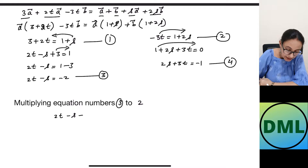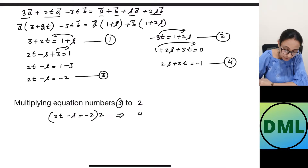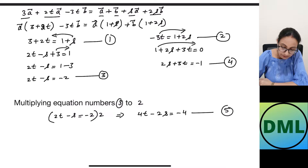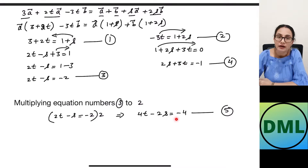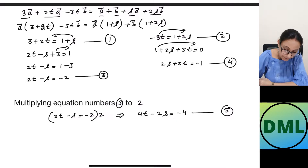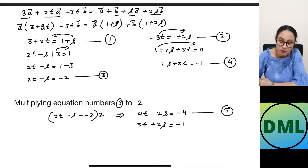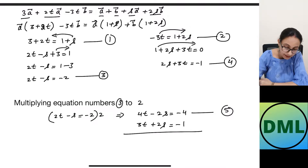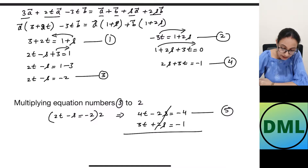Multiplying equation 3 by 2: 4t − 2s = −4 — this is equation 5. Writing equation 4 below: 3t + 2s = −1. Since the signs of s are opposite, we cancel s by adding: 4t + 3t = 7t = −5, so t = −5/7.